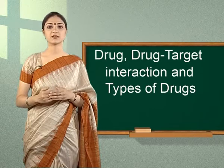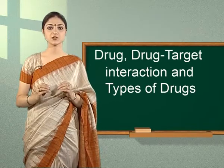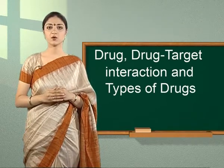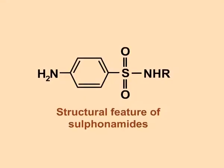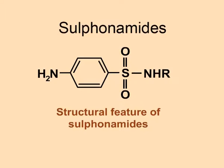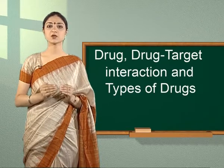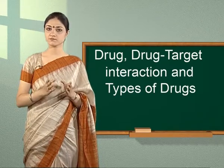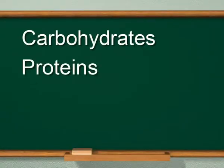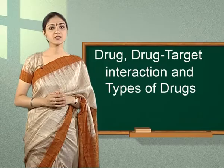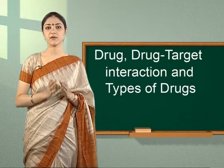On the basis of chemical structure: drugs have also been classified on the basis of their chemical structures because drugs having common structural features have similar pharmacological effectivity. For example, all sulfonamides having the common structural features as shown on screen are mostly antibacterial. On the basis of molecular targets: this classification is based upon the type of the molecular target such as carbohydrates, proteins, nucleic acids and lipids with which the drug interacts. This is the most useful classification for medicinal chemists.